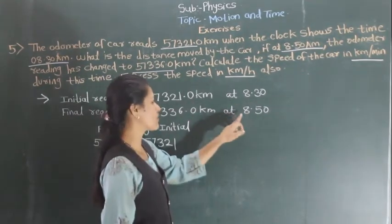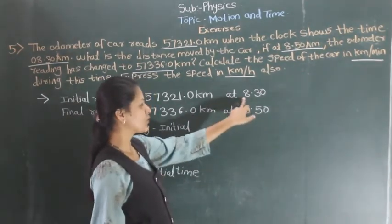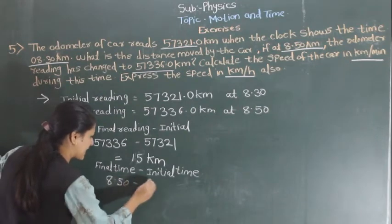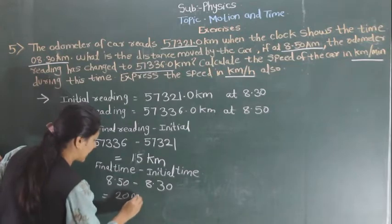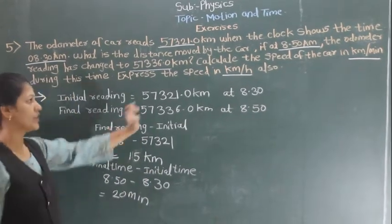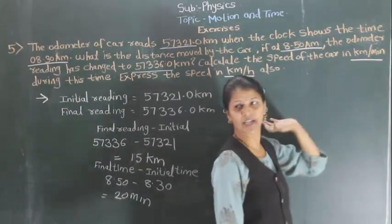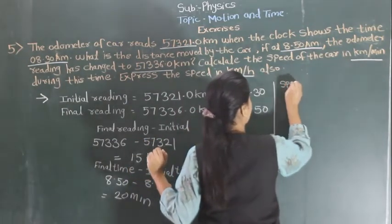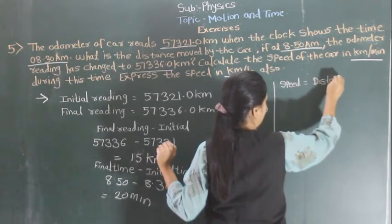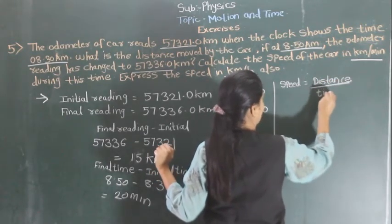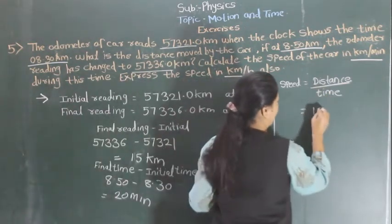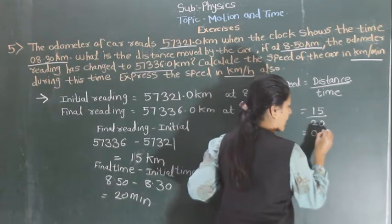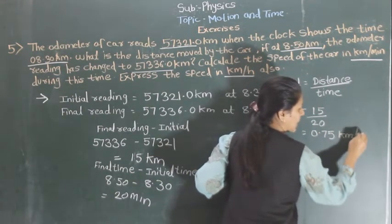Now we also have to calculate the time. The final time is 8:50 and initial is 8:30. So how much time has passed? 8:50 minus 8:30 is 20 minutes. The first case is to calculate the speed of the car in km per minute, so no conversion needed. Speed is distance upon time: distance is 50 km and time is 20 minutes. When you solve this, it comes to 2.5 km per minute.